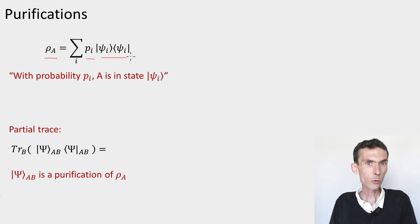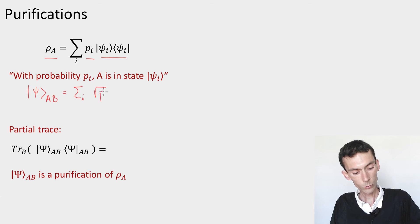So now what I claim is that I can introduce a new state on A and a new system B, where B is going to be the system that controls which i we get. So it's natural to introduce this state, psi AB, which is going to be the sum over all i. Let me put root pi psi i on A, tensored i on B.